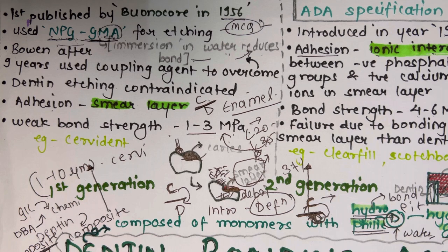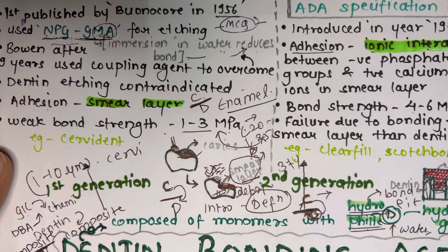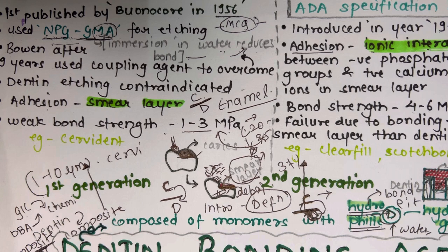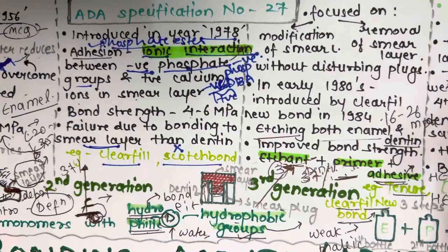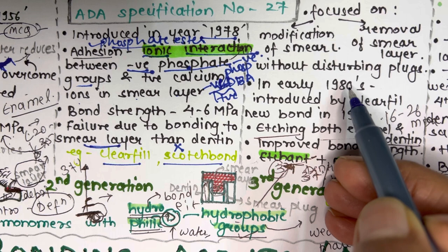Hello everyone, welcome back. This video is the second part of dentine bonding agent. In the last video, we covered the definition of the dentine bonding agent, the ADA specification number, indications, development of adhesives, milestones, and we started with the generations of dentine bonding agent, covering the first and second generation. Now starting with the third generation dentine bonding agent.